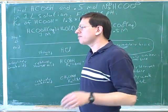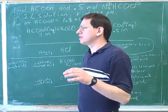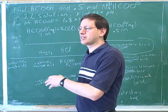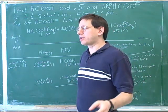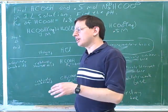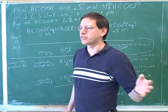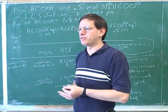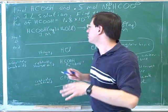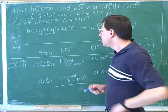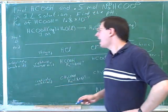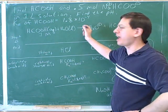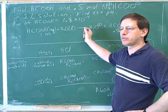If you have an absolutely weak acid, that means it goes to equilibrium with its conjugate. Well, if the weak acid is going to equilibrium with its conjugate, then the conjugate is going to equilibrium with the weak acid. So they must both be weak because they're both going to equilibrium. It should make sense that absolutely weak acids have to have absolutely weak conjugate bases.